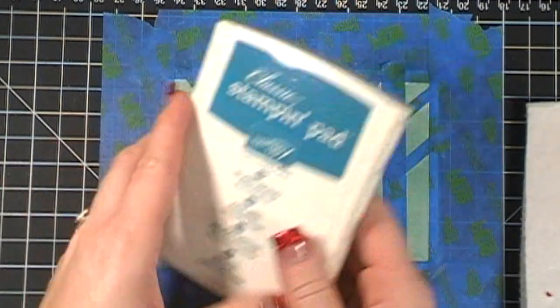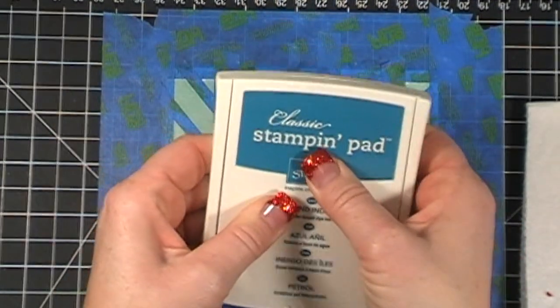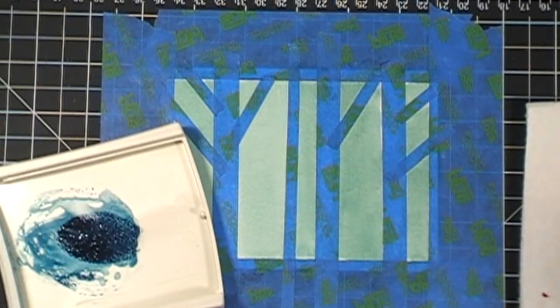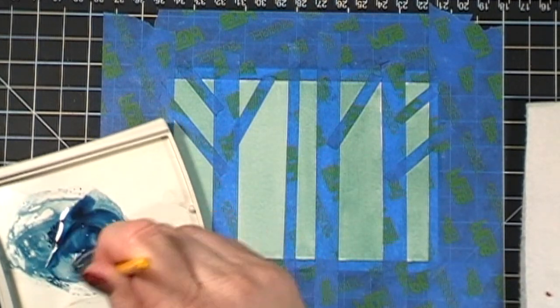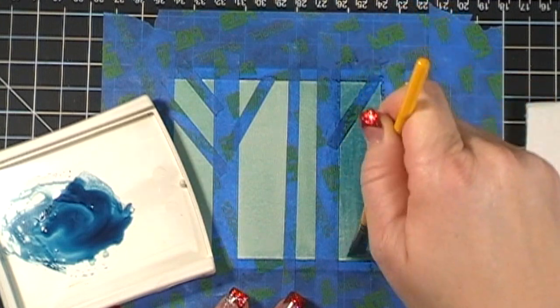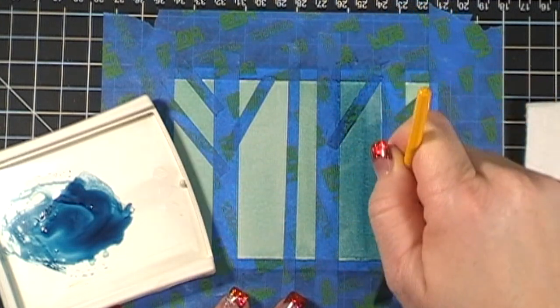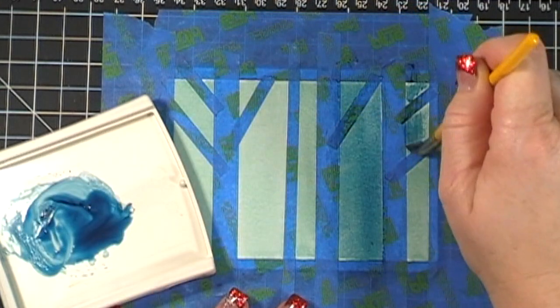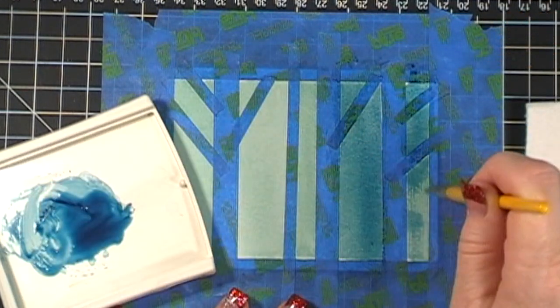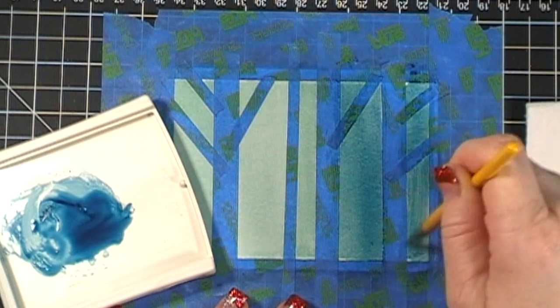We are going to use our Island Indigo ink. Get it nice and inky, clean your brush, and you're just going to go right over the top with Island Indigo.